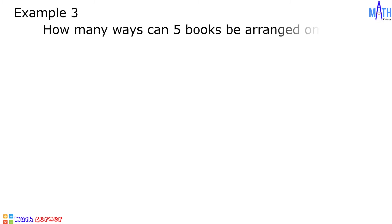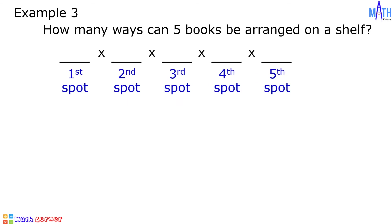There are 180 three-digit numbers that can be formed. Example number three: how many ways can five books be arranged on a shelf? There are five spots on a shelf. For the first spot, there are five books to choose from. For the second spot, there are only four books left since one book is already placed. For the third spot, three books. Fourth spot, two books. And one book for the last spot. Five times four times three times two times one is equal to 120. There are 120 ways to arrange the books.